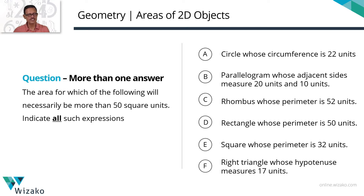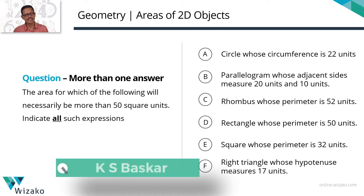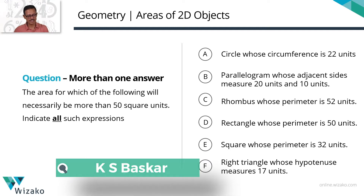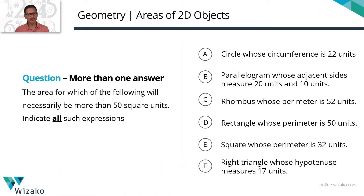Here is a general test practice question. It's a quantitative reasoning sample question from the chapter geometry. It's a more than one answer correct type of question, testing concepts in areas of 2D objects. The area for which of the following will necessarily be more than 50 square units — indicate all such expressions.